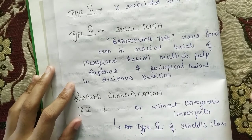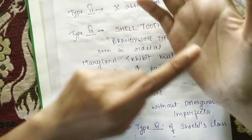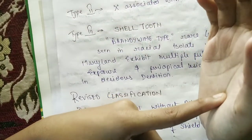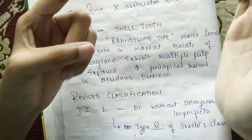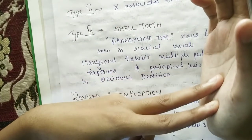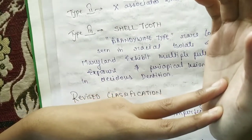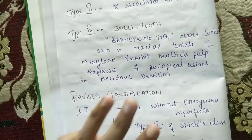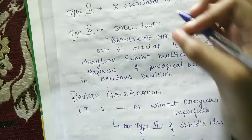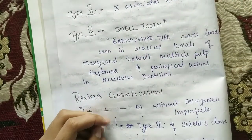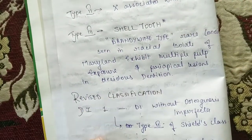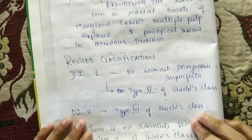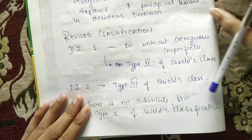To summarize Shields classification: Type 1 — patient has osteogenesis imperfecta. Type 2 — patient is not associated with osteogenesis imperfecta. Type 3 — shell tooth. Shell tooth is important and will be asked in viva and NEET MDS exams. Now after this, a revised classification has been given.